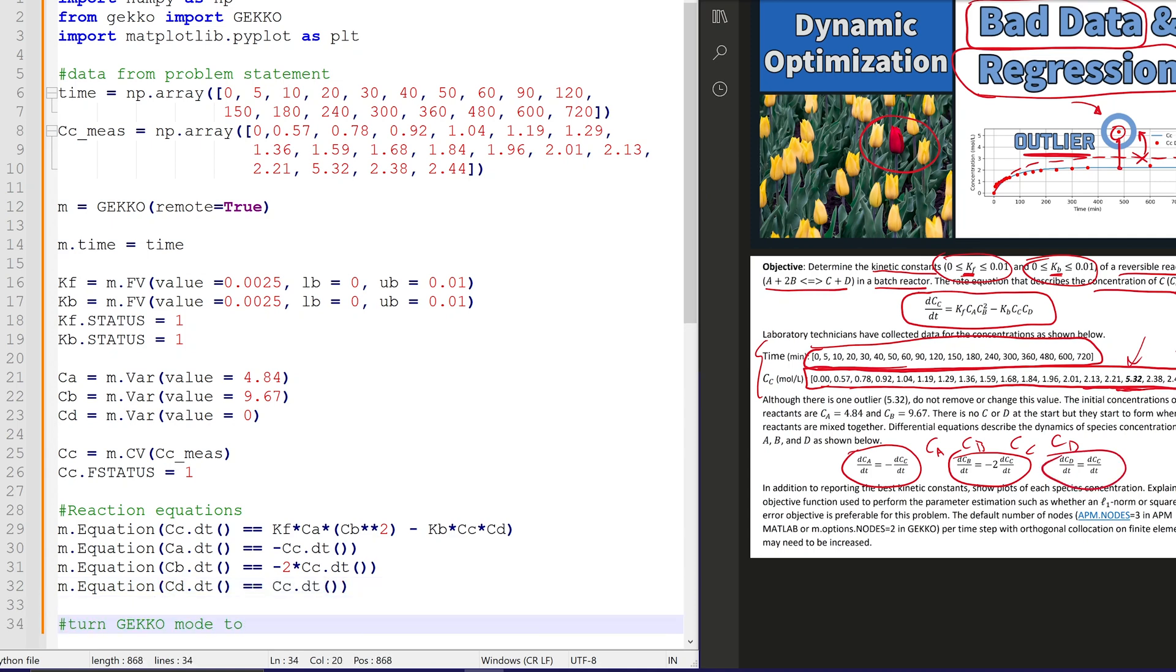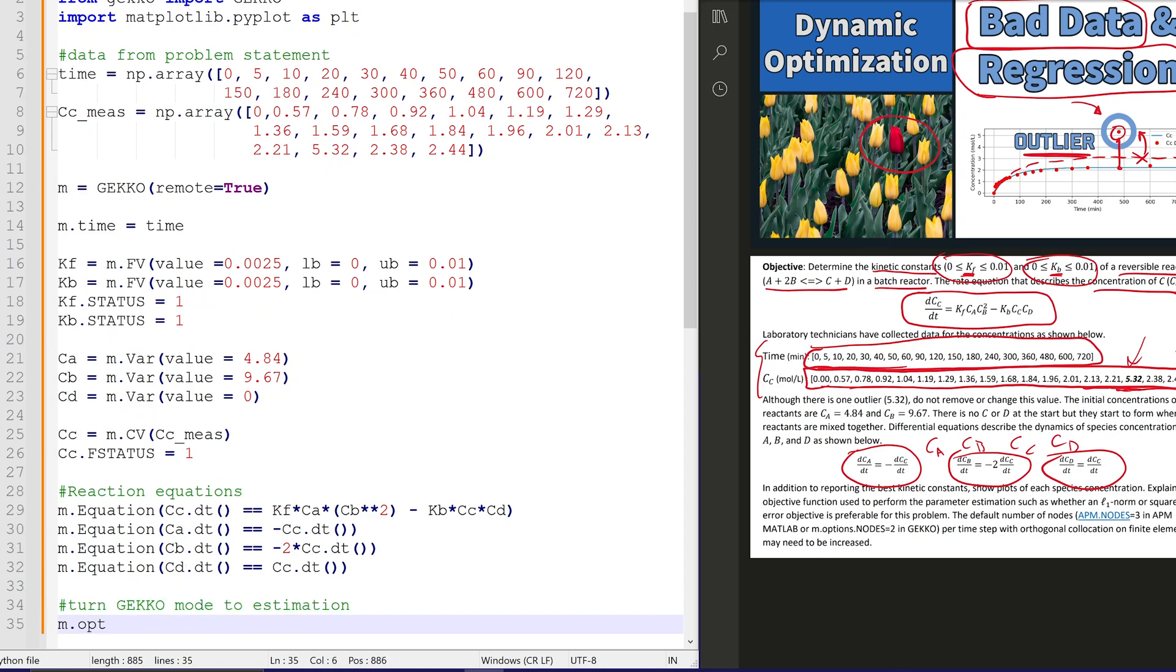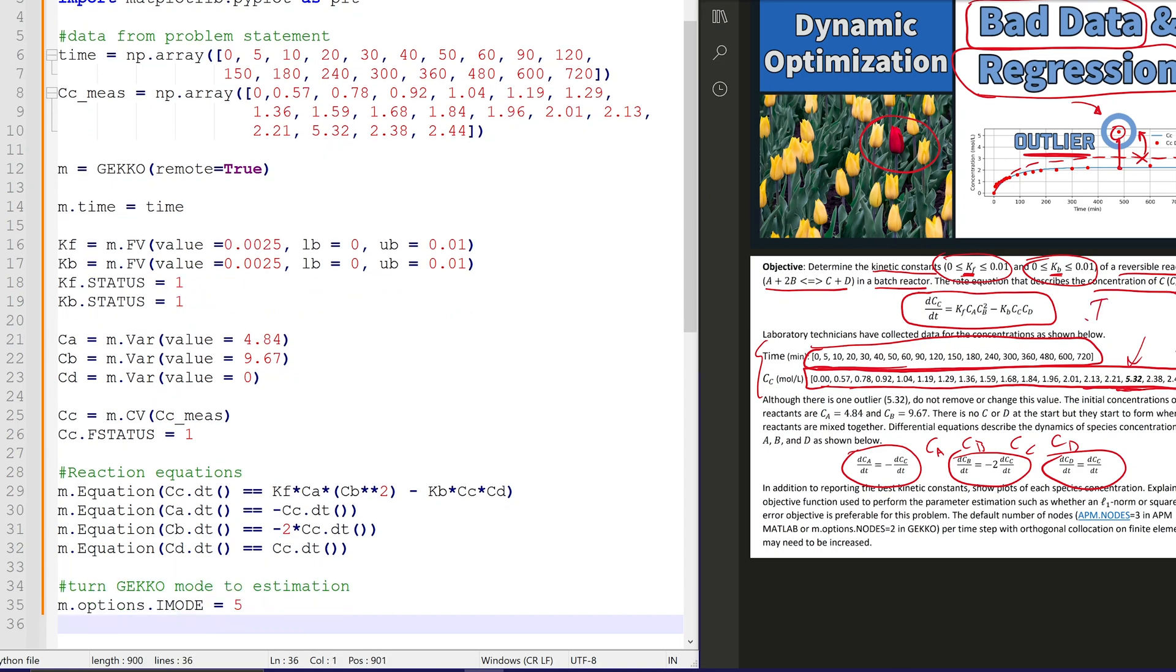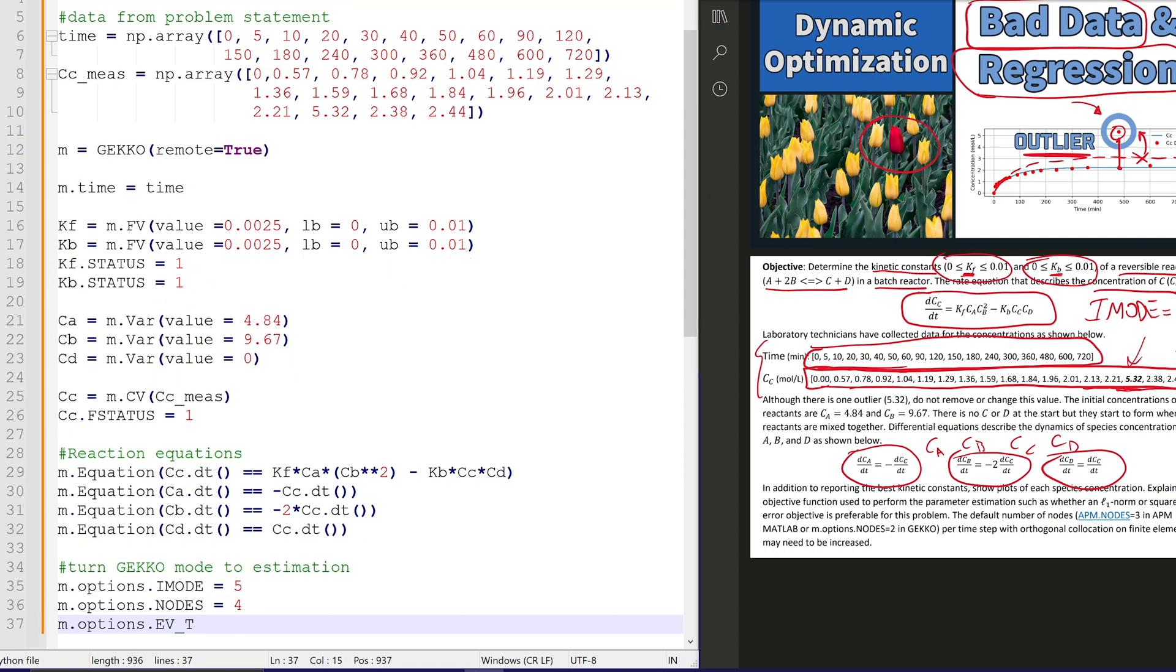Now we'll go ahead and turn on GEKKO mode to estimation. And we already have our time defined. We're going to set that to IMODE 5. So that is a dynamic estimation mode. And EV type is 1.